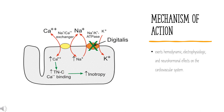Digoxin also stimulates the parasympathetic nervous system via the vagus nerve, leading to sinoatrial (SA) and atrioventricular (AV) node effects, decreasing the heart rate. Part of the pathophysiology of heart failure includes neurohormonal activation leading to an increase in norepinephrine. Digoxin helps to decrease norepinephrine levels through activation of the parasympathetic nervous system.